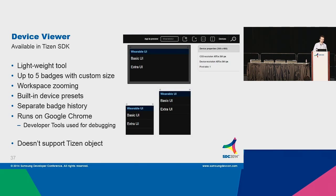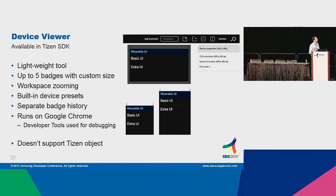The third one is a Device Viewer — I was actually working on this. It's a lightweight tool where you can set up to five badges and check your layout quickly. You can dynamically change the size of the layouts using sliders. There are a few presets and your work can be zoomed to show even the TV device. The coolest thing is that it has separate history for each badge, so you can browse your web application in every badge separately and check different pages without affecting other badges. It runs on Google Chrome, so you still have developer tools for viewport emulation and JavaScript debugging. Unfortunately, it doesn't support the Tizen object yet.